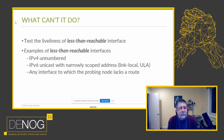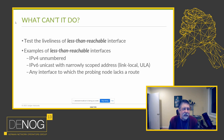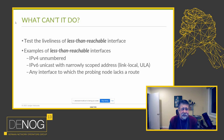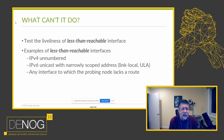What can't ping do? It can't test the liveness of a less-than-reachable interface. What is a less-than-reachable interface? Maybe an IPv4 unnumbered interface, an IPv6 interface with a narrowly scoped address — a link-local address, a ULA — that doesn't have a global address. Or, for that matter, any interface that the probing node doesn't have a route to. That's a less-than-reachable interface, so ping can't test its liveness.